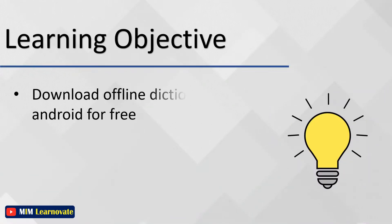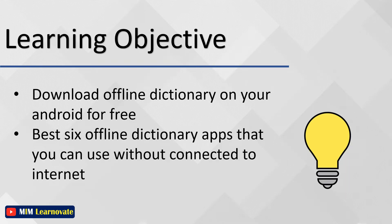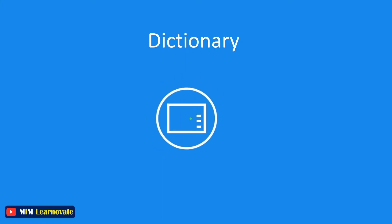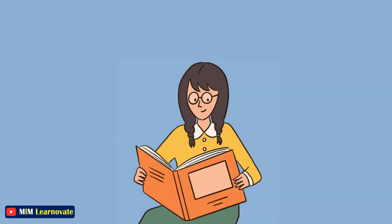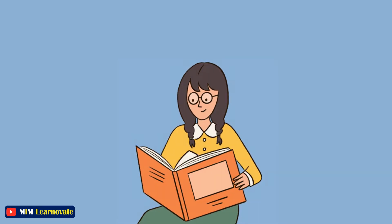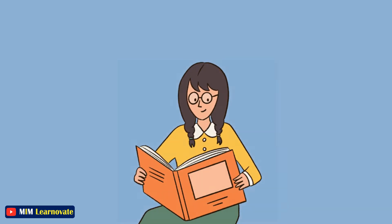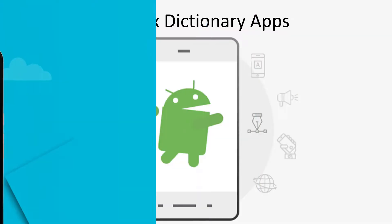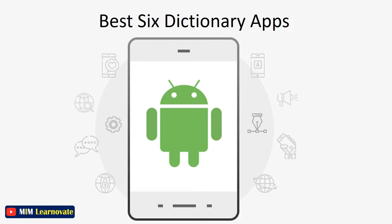Today in this video, I will show you how to download offline dictionaries on your Android for free, and will tell you about the best 6 offline dictionary apps that you can use without being connected to the internet. A dictionary is a must-have app for smartphone users. No matter you are a student, teacher, researcher, or a parent, it will help you understand the meaning of new words or help you learn a new language. As it's not always possible to stay connected to the internet, you need a dictionary app that works offline.